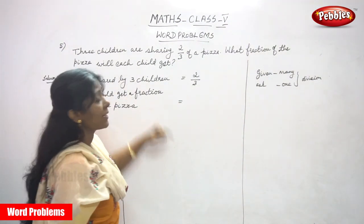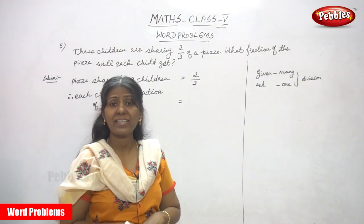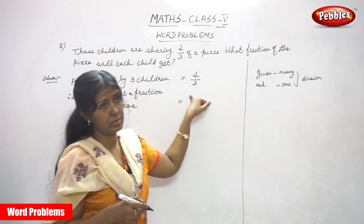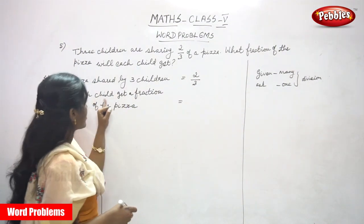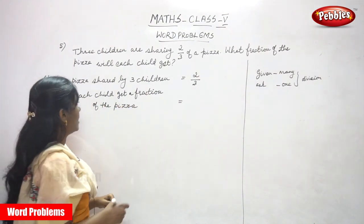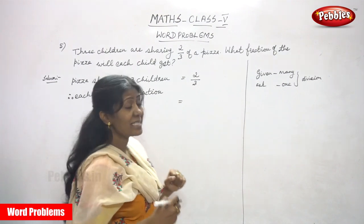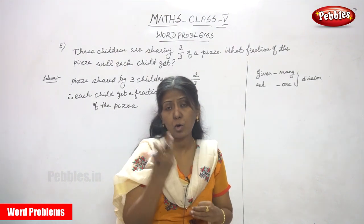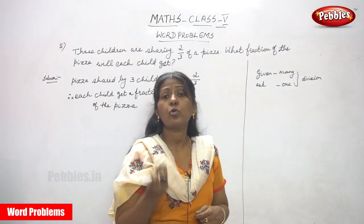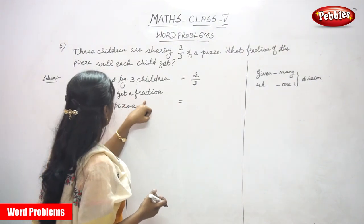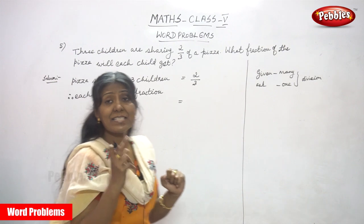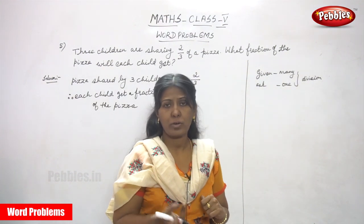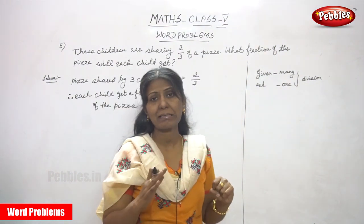Now look at this. Pizza is shared by three children, because the number of children is three. Pizza shared by three children is 2/3 fraction. Each child gets a fraction of the pizza — you have to find out. How much fraction each child gets — that is the question. Each child means every single child. That is the question, so it is a division.